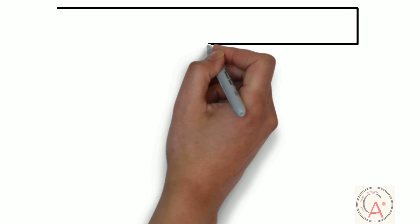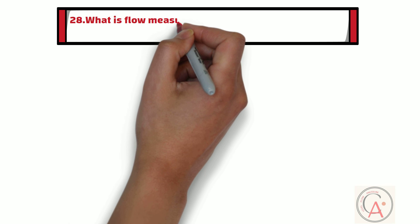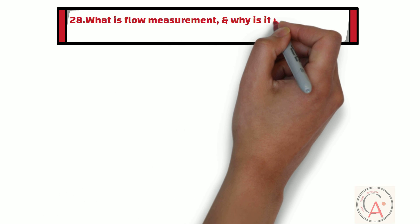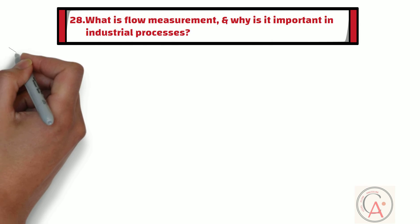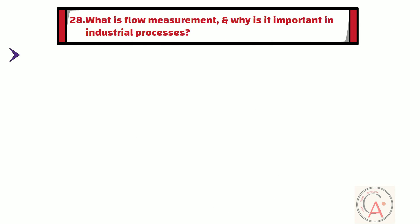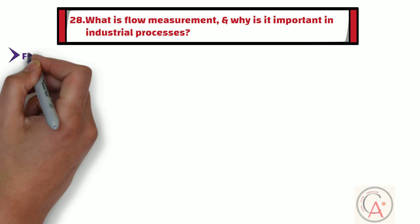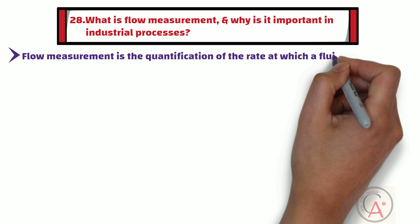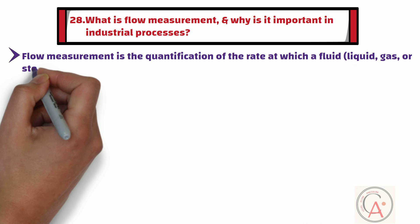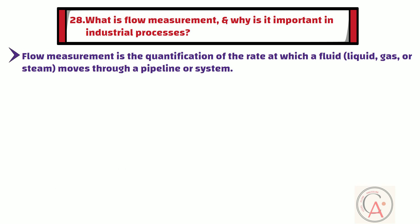The 28th question is: what is flow measurement and why is it important in industrial processes? Flow measurement is the quantification of the rate at which a fluid such as liquid, gas, or steam moves through a pipeline or system. It is crucial for process control, quality assurance, and resource management.